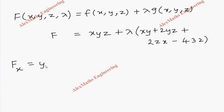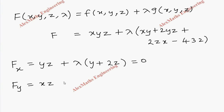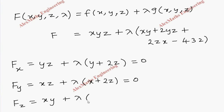We find the partial derivatives. ∂F/∂x: differentiating xyz gives yz; differentiating lambda(xy + 2yz + 2zx) with respect to x gives lambda(y + 2z). Set equal to zero: yz + lambda(y + 2z) = 0. Similarly, ∂F/∂y: xz + lambda(x + 2z) = 0. And ∂F/∂z: xy + lambda(2y + 2x) = 0.